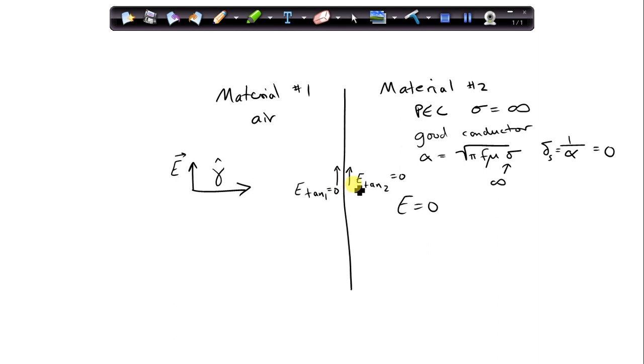And this must be true for all time at the interface. In order to achieve zero for all time at the interface, it means that the reflection, there has to be a reflection that's produced at the interface, and it has to be equal and opposite to the incident wave.